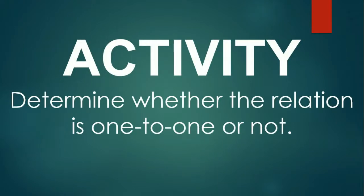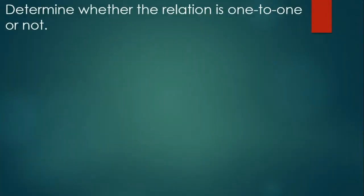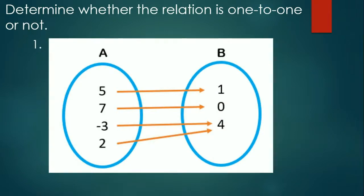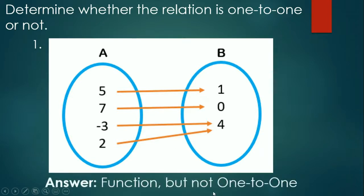Let's have an activity. Determine whether the relation is a one-to-one function or not. First item: 5 is paired to 1, 7 to 0, negative 3 to 4 — but then 2 is also paired to 4. So 4 is repeated. Each element in A has only one arrow, so it is a function, but it is not one-to-one because 4 appears twice as a range value.